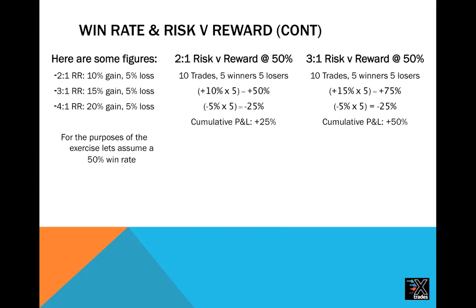For a two-to-one risk-to-reward ratio at a 50% win rate, so we have 10 trades — five are winners, five are losers. That 10% winner nets about 50% overall if we reach price targets 50% of the time. Whereas the losers, if we lose 5% on each of them, and we lose half the time, that's losing out on 25%. But that cumulative P&L, because of our stronger risk-to-reward ratio, comes out to plus 25%.